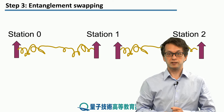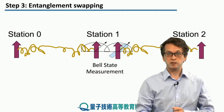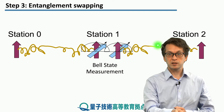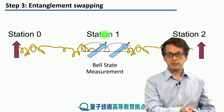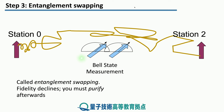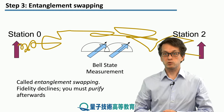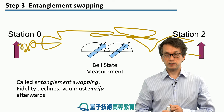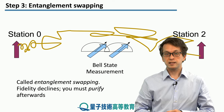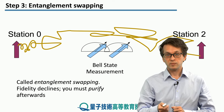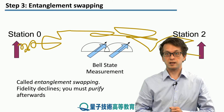So how do we do that? We perform a Bell state measurement at station 1. Depending on the outcome of the measurement, we establish end-to-end long-distance entanglement between station 0 and station 2, even though they are not directly physically linked. This procedure is known as entanglement swapping, and we will derive it mathematically in this step.